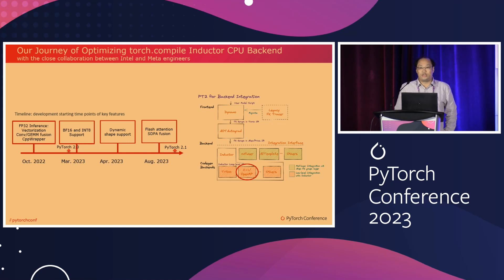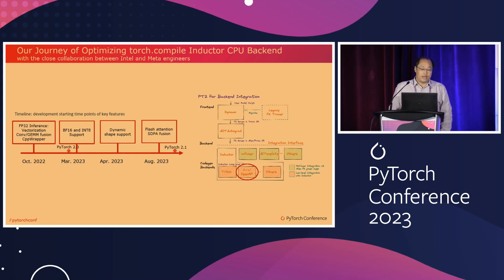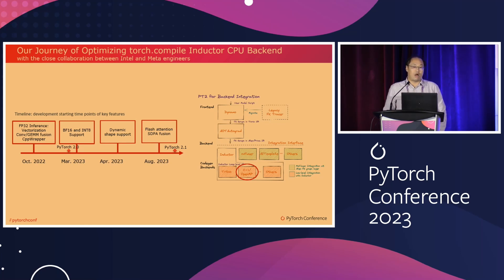Torch Inductor CPU backend is the default compiler backend for CPU with Torch.compile. It generates CPP fusion kernels with OpenMP and leverages the standard CPP compiler to create executables targeting various CPU architectures.